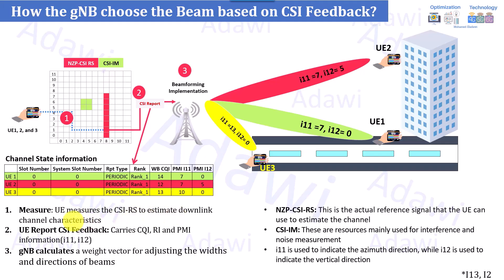The process has two key steps: first, the user measures the CSI-RS to estimate the downlink channel characteristics. Second, the user reports this information to the gNB in the uplink direction via the CSI report, which covers CQI, rank indication, and PMI — including i11, i12, and co-phasing information. Once the gNB receives this, it calculates the weight vector to adjust the beam toward that particular user and deliver more directed traffic beams on the physical downlink shared channel.